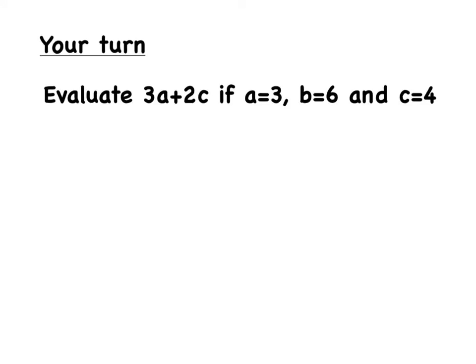So, we have to evaluate 3A plus 2C if A is equal to 3, B is equal to 6, and C is equal to 4. So, just looking at the algebraic expression, we do not have any B's. So, the very first thing that we could do is cross out that B equals 6 because we don't even need it.